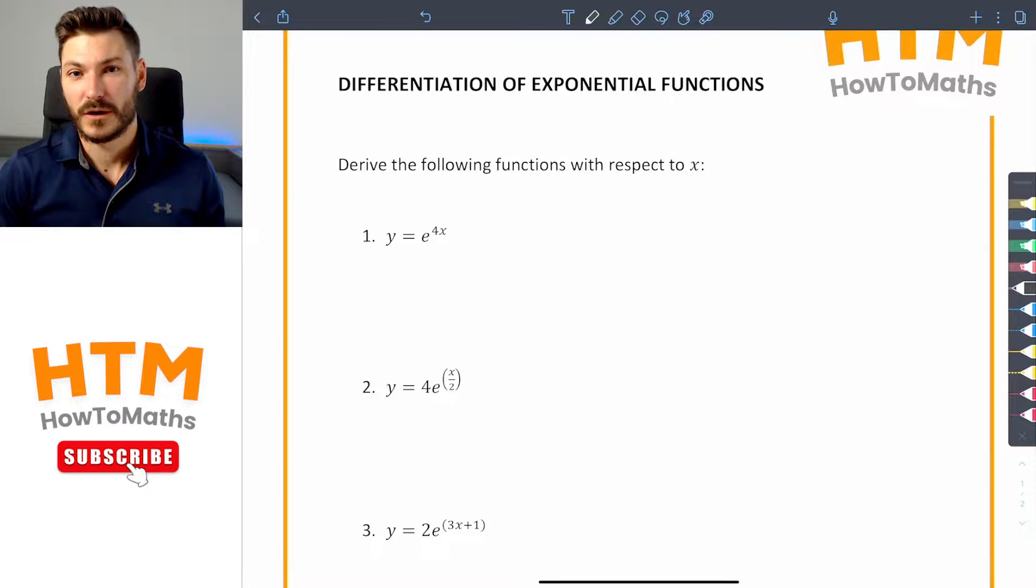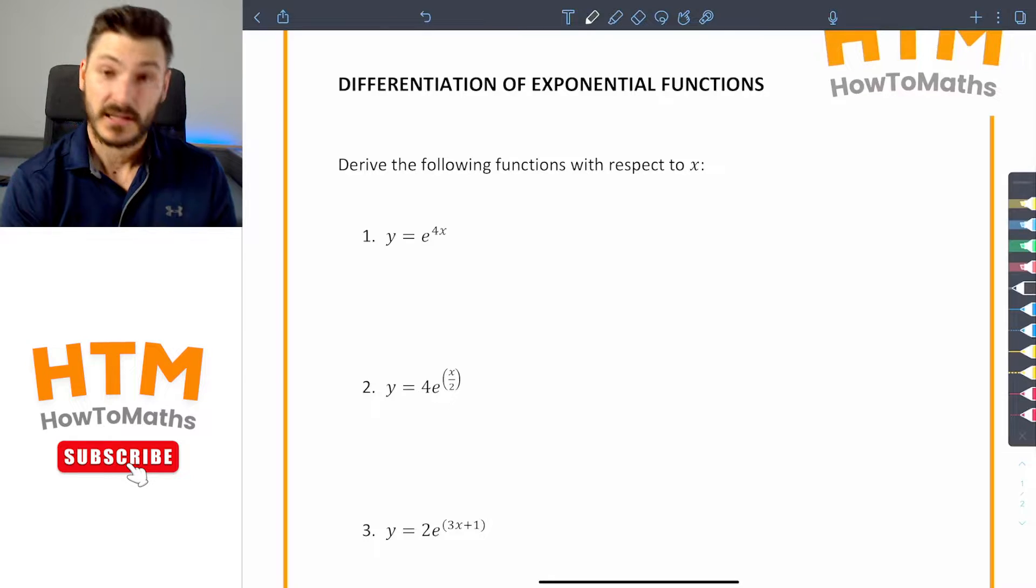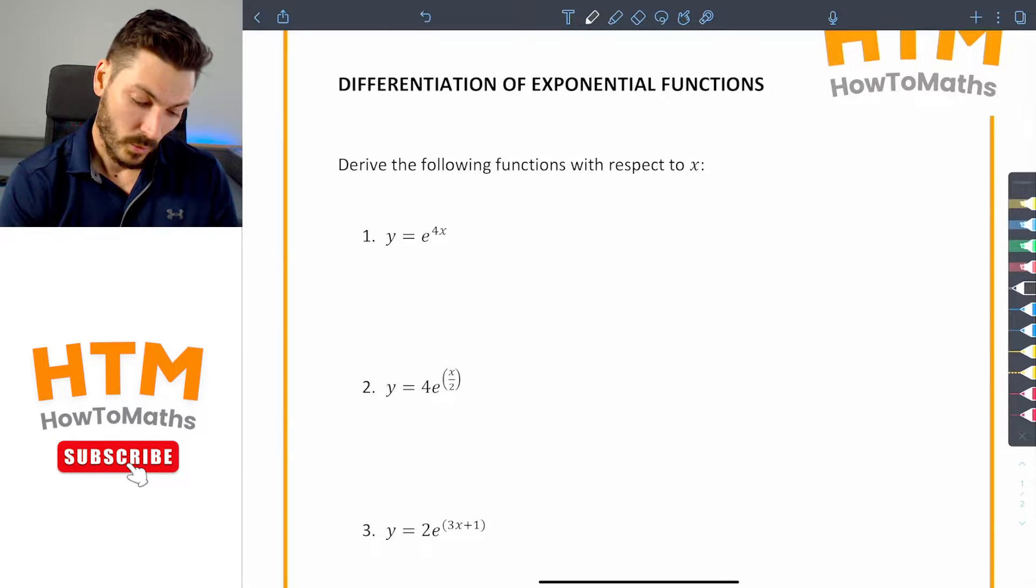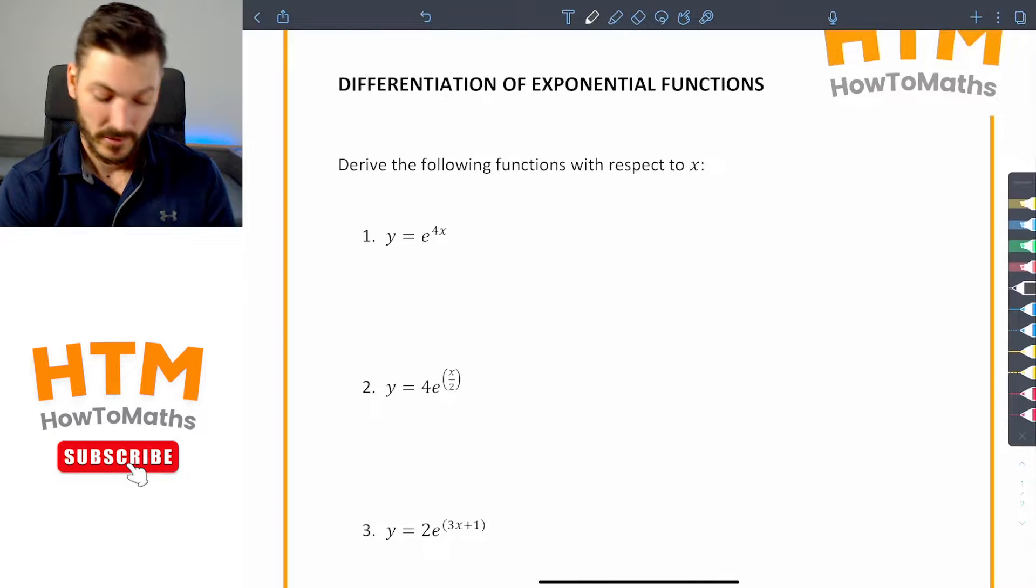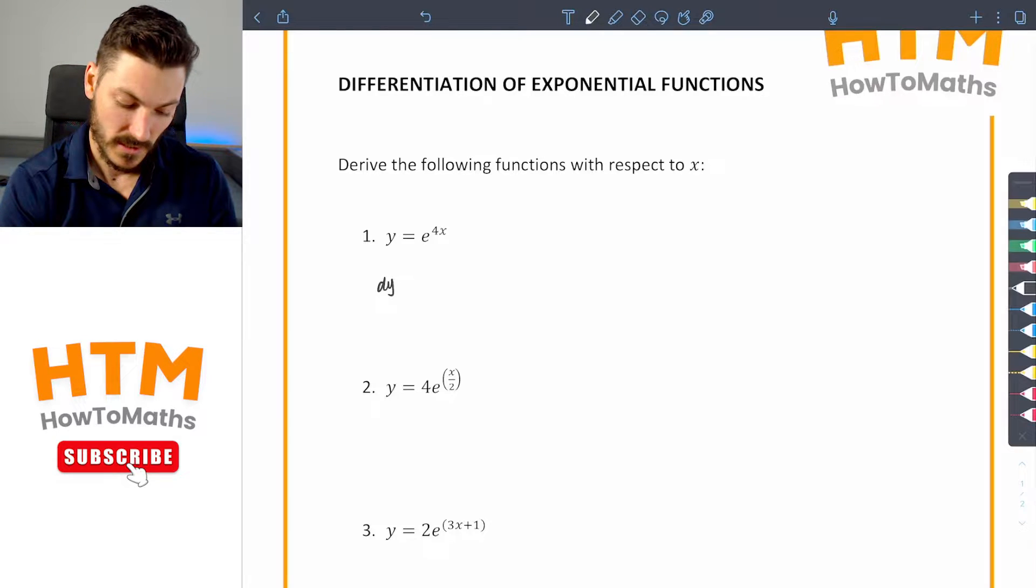Alrighty, welcome to the solutions video for the differentiation of exponential functions. Let's get straight into it. So question one, y equals e to the power of 4x. This is our rule number two. We're just going to say dy dx is equal to 4e to the 4x.